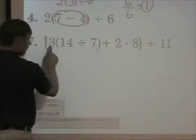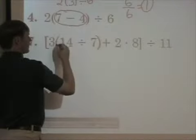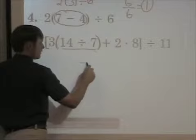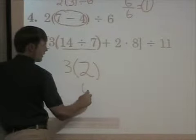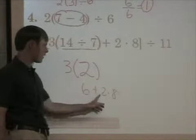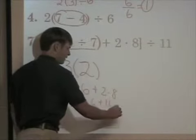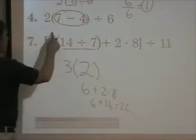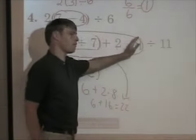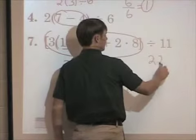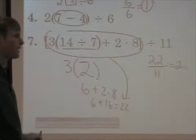First, do I multiply? Do I add? Or what do I do first? Parentheses — I do the parentheses first. Fourteen divided by seven is two. Two times three is six. And I've got six plus two times eight. What do I do first — six plus two, or two times eight? Two times eight is sixteen. Sixteen plus six is twenty-two. So out of all this, what did I get? Twenty-two. But I'm not done — it says take the answer in the brackets and divide it by eleven. Twenty-two divided by eleven equals two. So remember, any time you have brackets, do what's inside first, then go to the outside.